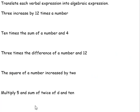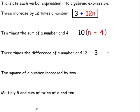Translate each verbal expression into an algebraic expression. 'Three increased by twelve times the number' — no parentheses needed. 'Ten times the sum' — we're multiplying by the sum, so we need parentheses: 10(n + 4). 'Three times the difference of a number and twelve' — we need parentheses: 3(n − 12). 'The square of a number increased by two' uses an exponent: n² + 2. Finally, 'multiply five and the sum of twice a number d and ten' looks like 5(2d + 10).